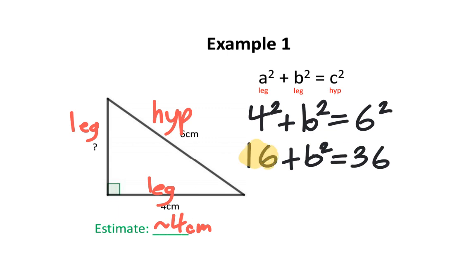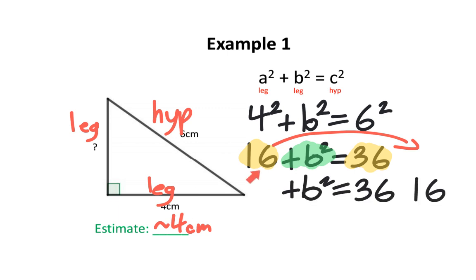Right now we have a number on the left side, a number on the right side, and a variable. There's a saying I like to use: like terms like to be together. Both 16 and 36 are like terms since they are both just numbers. I'm going to move 16 over the equal sign to be with the 36. However, when you move a number across the equal sign, it becomes the opposite — so this is no longer positive 16, it is now negative 16. I'm going to erase the positive sign. We can do 36 subtract 16, which gives me 20.